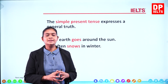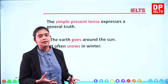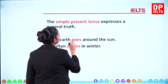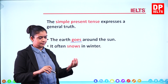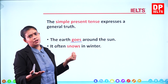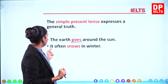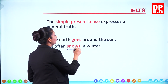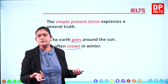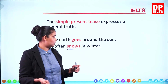Apita simple present tense yaka paavitchi karanne puluwaang, samanen tiyana atta deval gana kata karana kota. Let us have a look at it. The earth goes around the sun — the sun is here and the earth goes around it. That's a general truth which you and I we all know about. It often snows in winter. When it is winter, it's really cold and we know that most of the time snow falls. So that again is a general truth.